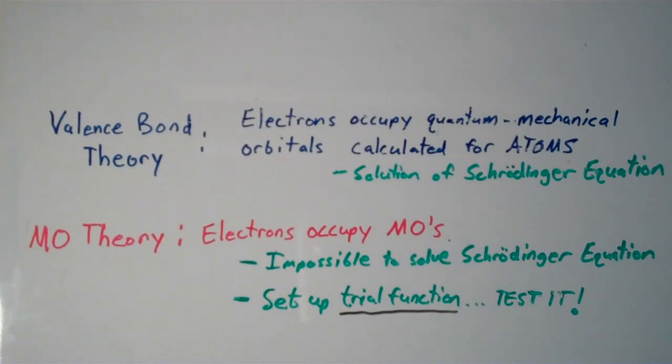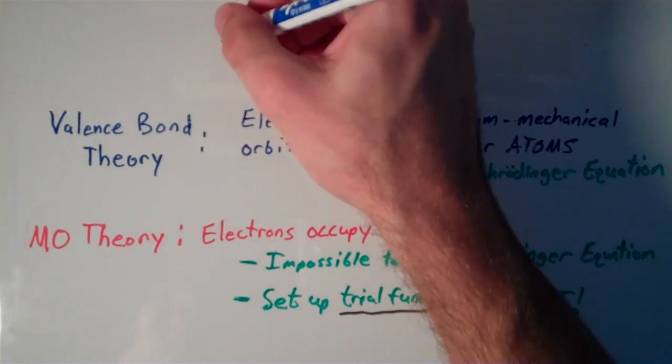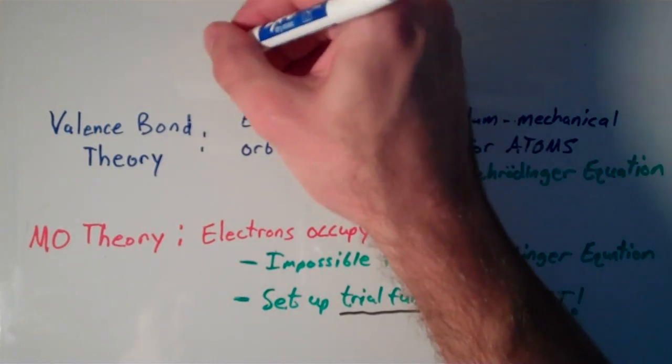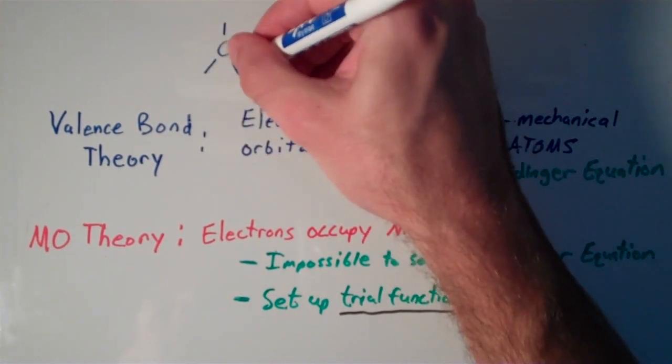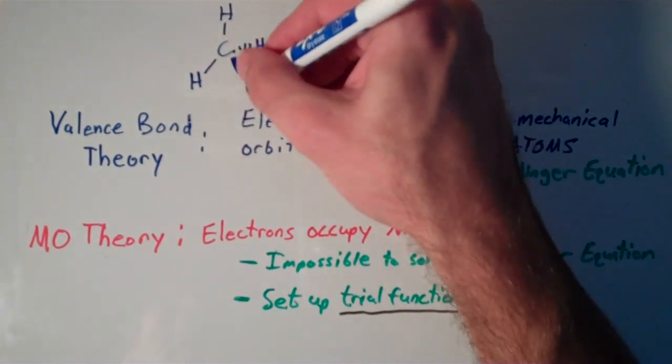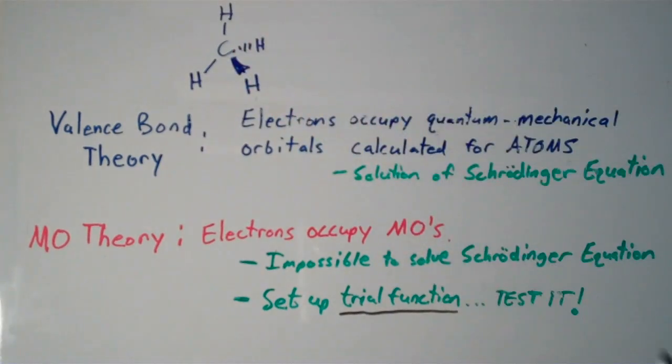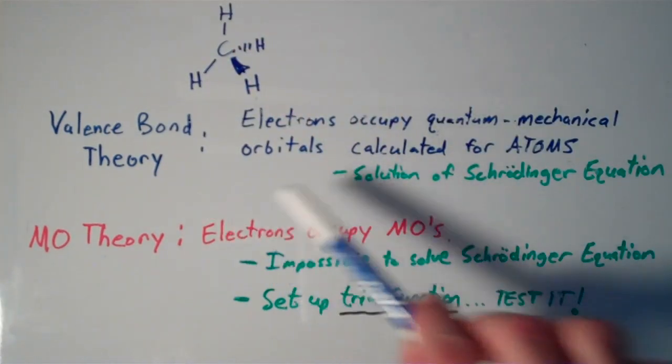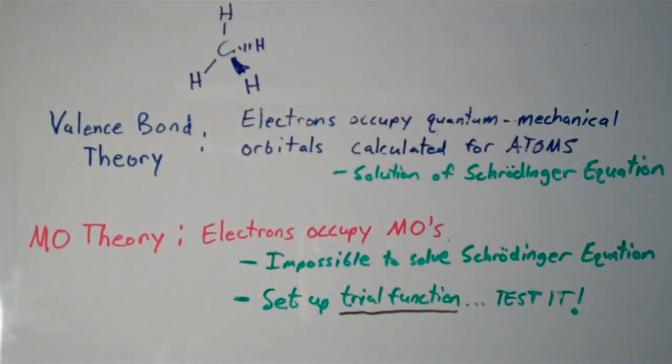So, valence bond theory is pretty useful because it can explain a lot of phenomenon that are observed among molecules. For instance, the shape of methane, CH4, is a tetrahedron. That's the observed shape of methane. And hybridization, or valence bond theory, accounts for this observed shape.